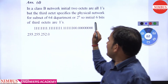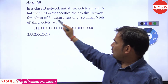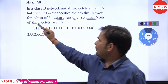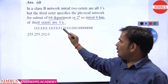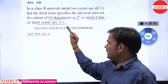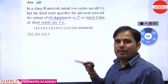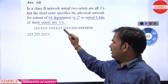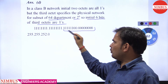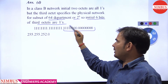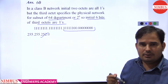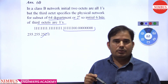You can see that 2 to the power 6 equals 64 departments. So the initial 6 bits of the third octet are 1. Because in a class B network, the subnet mask is 255.255.0.0, and these are the host bits. We put 1 in the first 6 bits of the third octet, giving us subnet mask 255.255.252.0. Thank you.